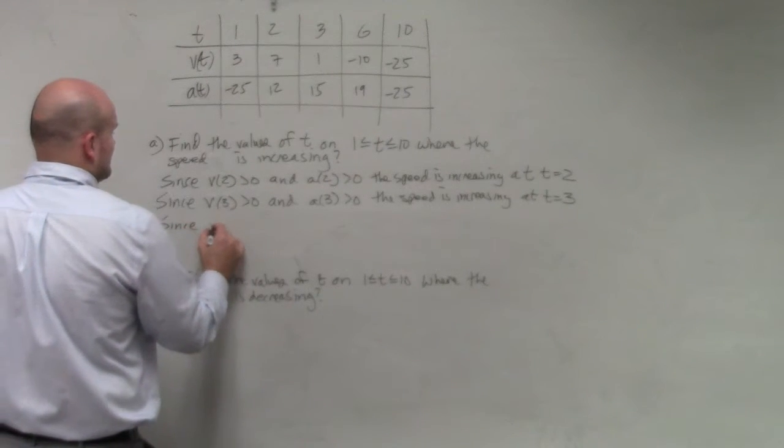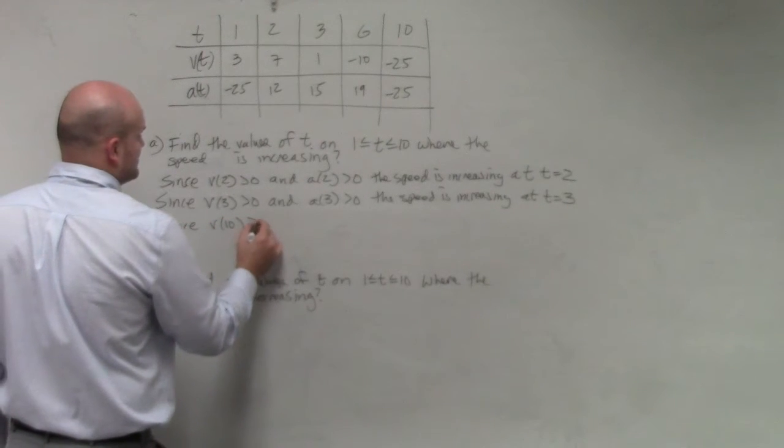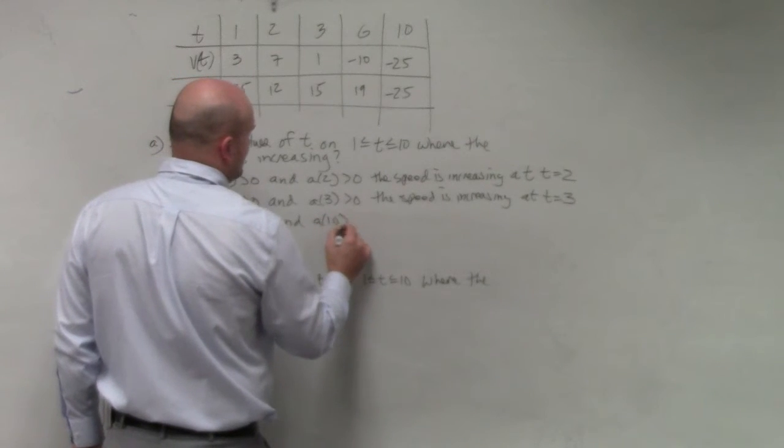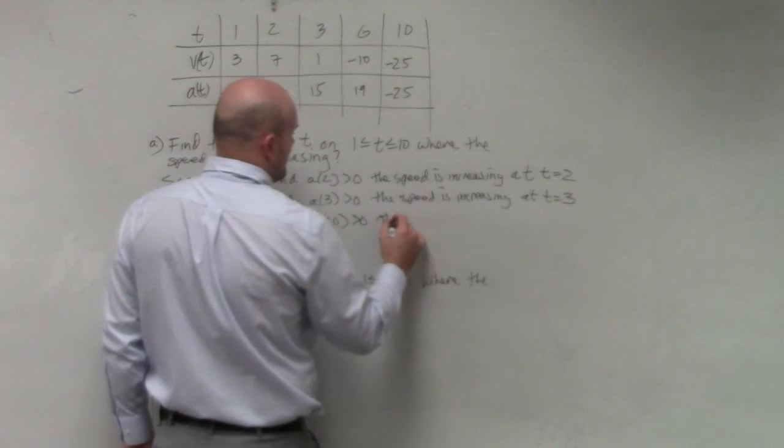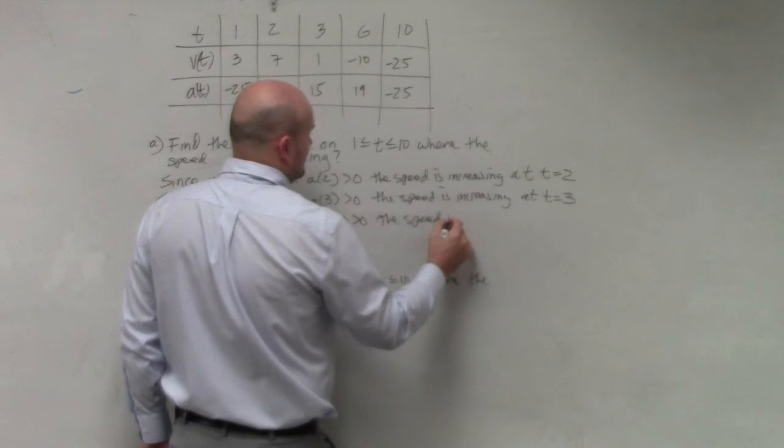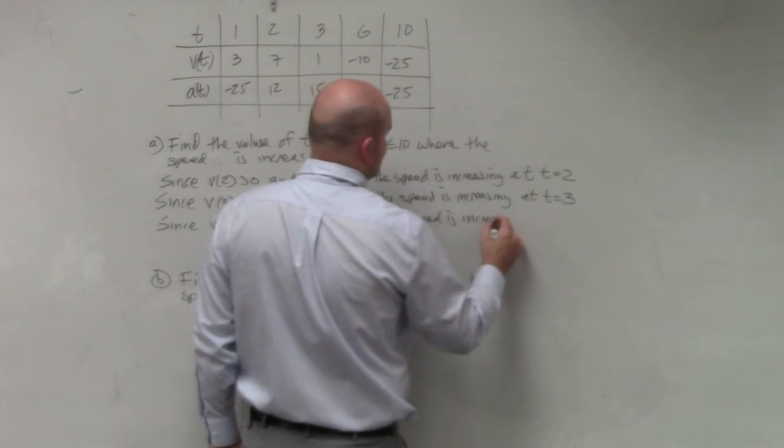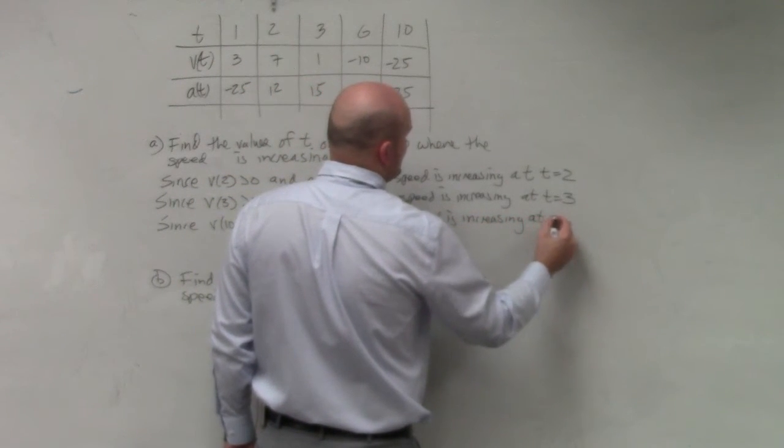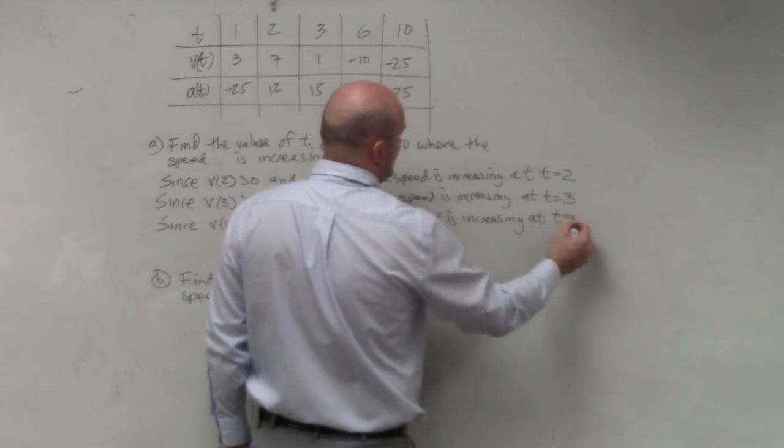And since v equals 10 is greater than 0, and a equals 10 is greater than 0, so the speed is increasing at t equals 10.